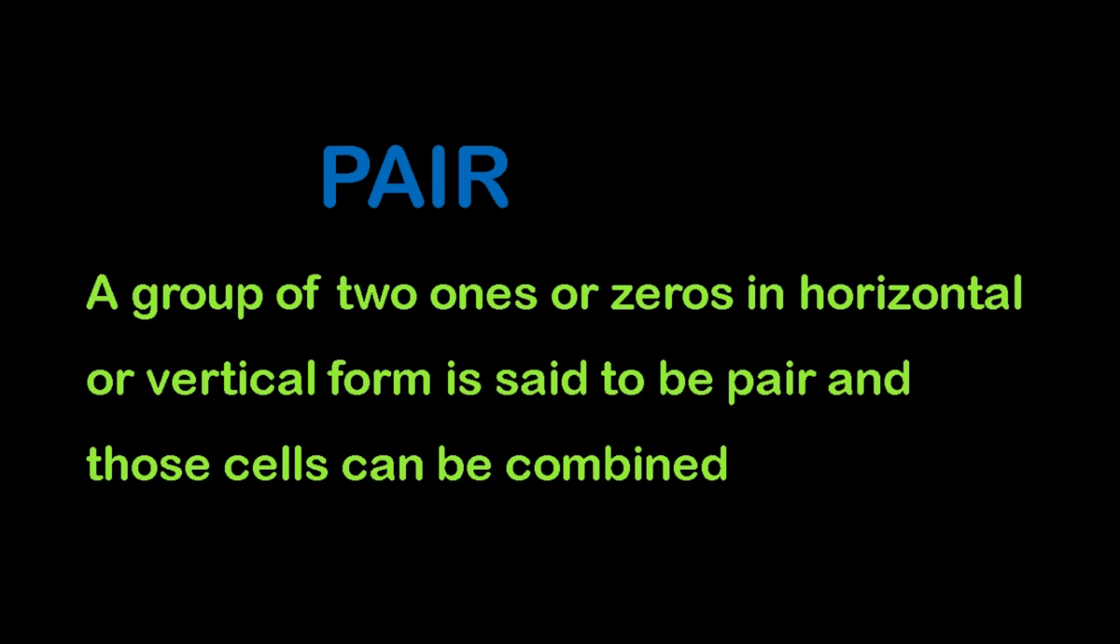Next we have different methods of grouping. The first one is a pair. The grouping of two ones or zeros in horizontal or vertical form is called the pair, and those cells can be combined. So if you have two adjacent ones, you can combine that.